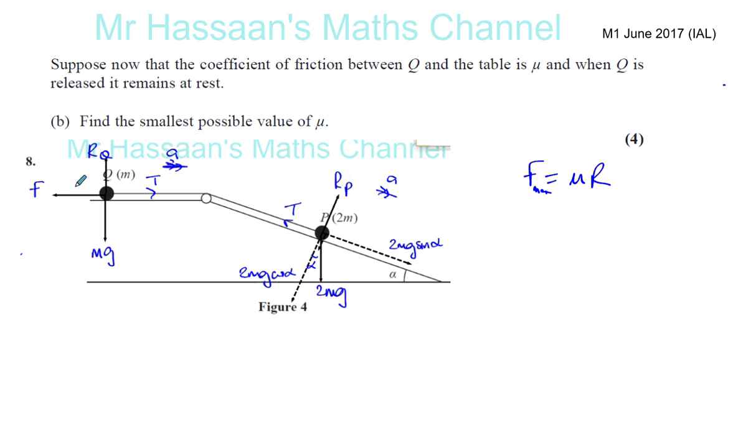That means the frictional force is big enough to oppose the tension. So the frictional force is equal to the tension. And if you keep increasing the tension, the frictional force will keep increasing until it reaches its maximum value.